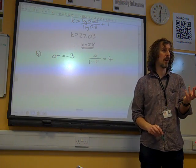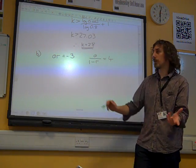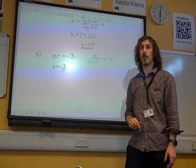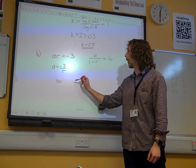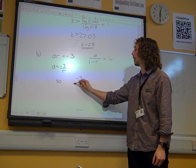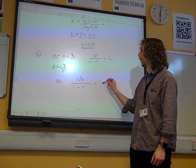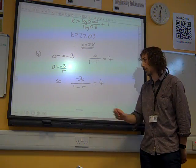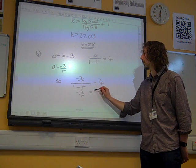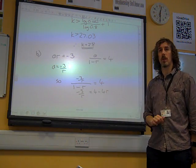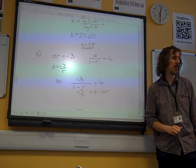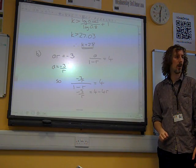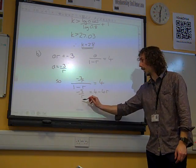So now we've got simultaneous equations which we need to solve. We're looking for R, aren't we, really? So I think what we're going to do is we're going to write A is minus 3 over R and we're going to substitute for A. So minus 3 over R divided by 1 minus R is 4. It looks like a fairly horrible equation but we're going to multiply 3 by the 1 minus R to get that. Is that right? That's 4 brackets 1 minus R which gives us 4 minus 4R. And now we're going to multiply by R.